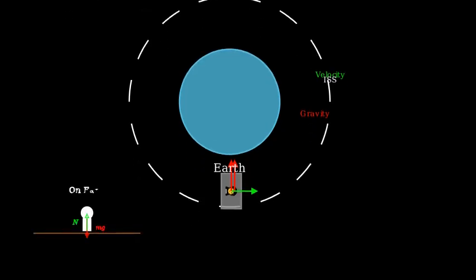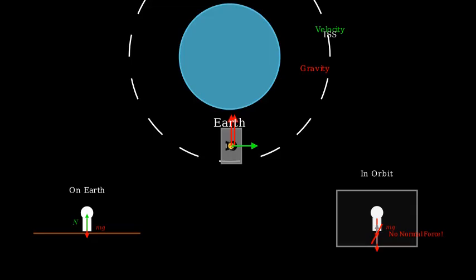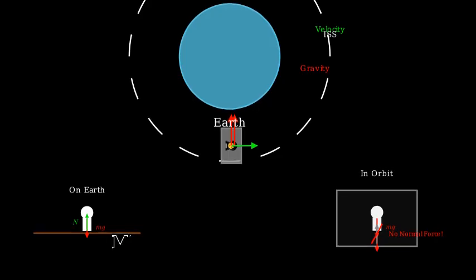No normal force. Without a normal force, there's no sensation of weight. This is why astronauts float inside their spacecraft, not because gravity is absent, but because both they and their spacecraft are falling together, so there's no relative force between them.